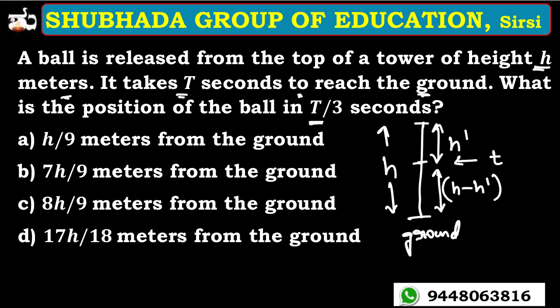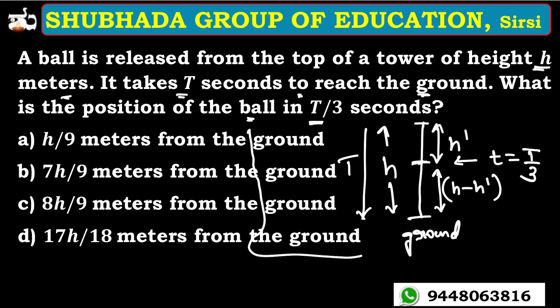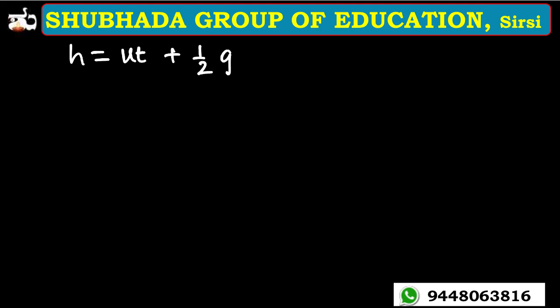The question asks: at time t equal to t by 3 seconds, what is the position of the ball from the ground? We know the ball falls for the full t seconds to cover height h. Since u equals 0, h equals half g t squared. After t by 3 seconds, the distance fallen from the top is h dash equals zero plus half g into (t/3) squared.